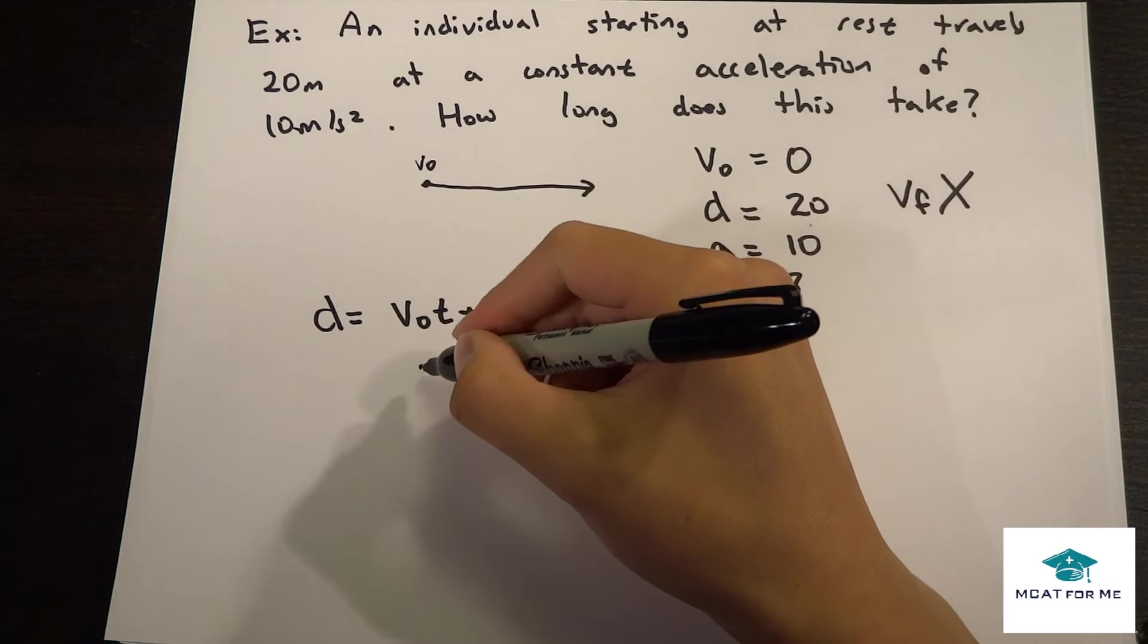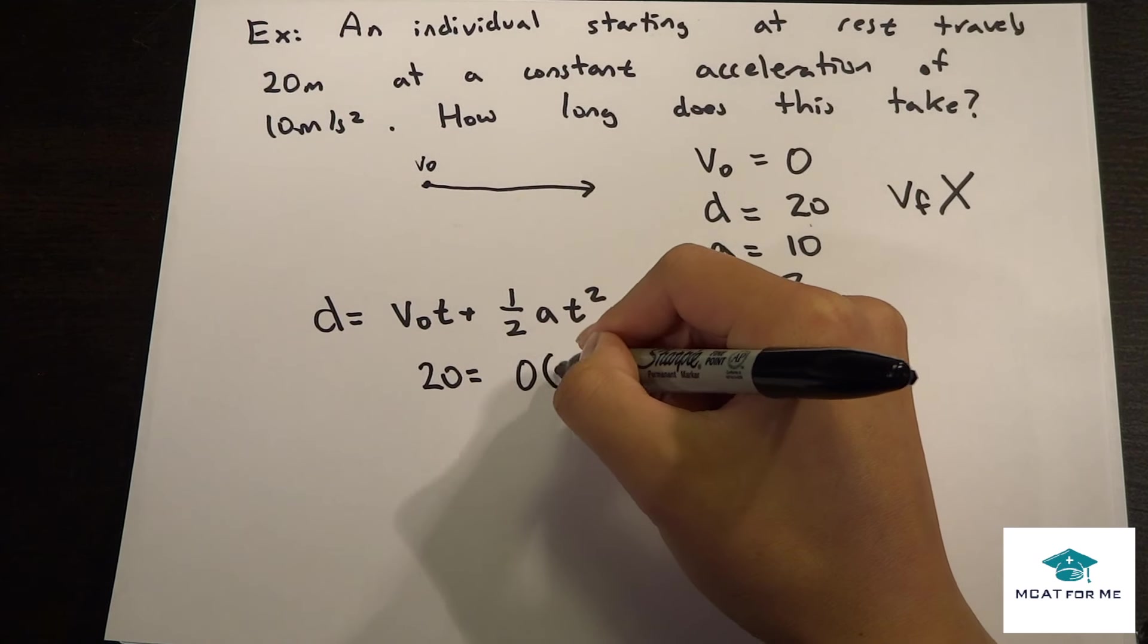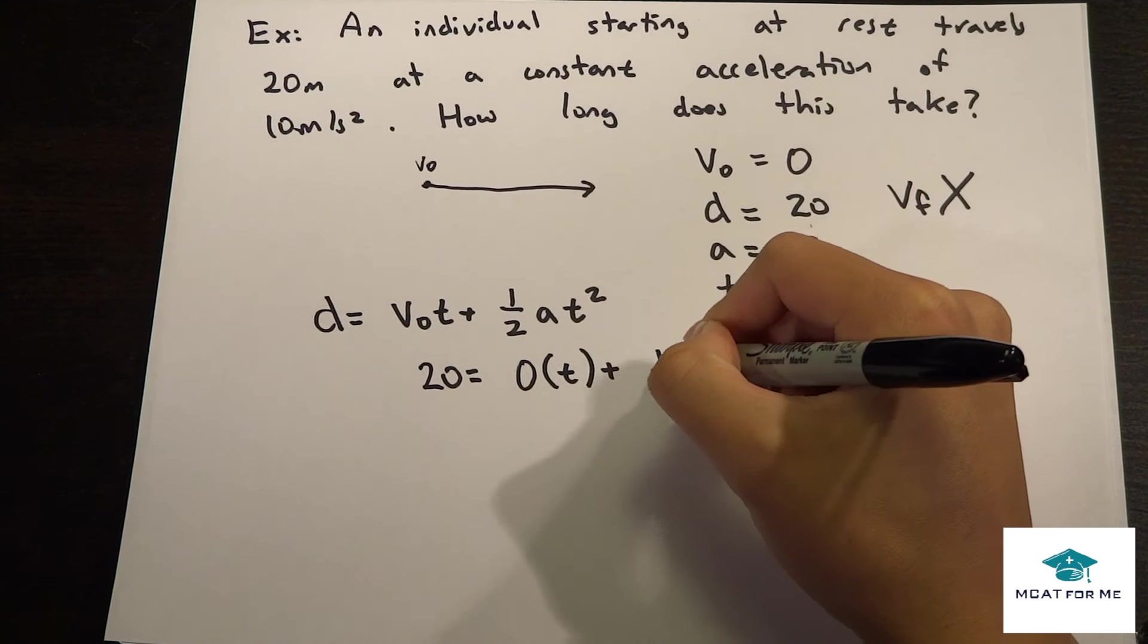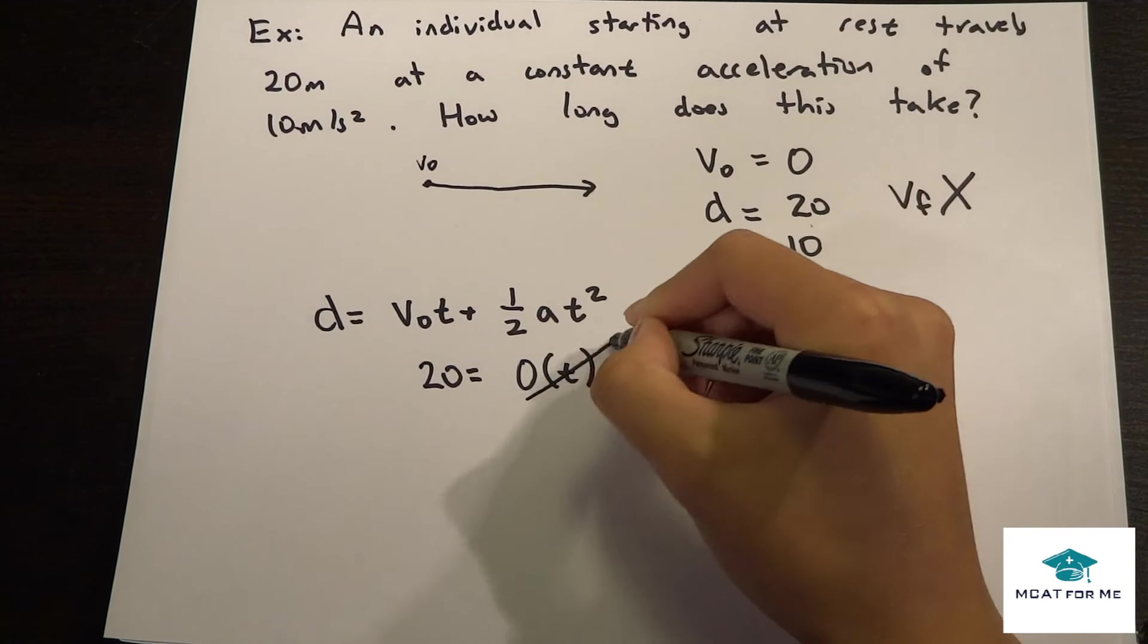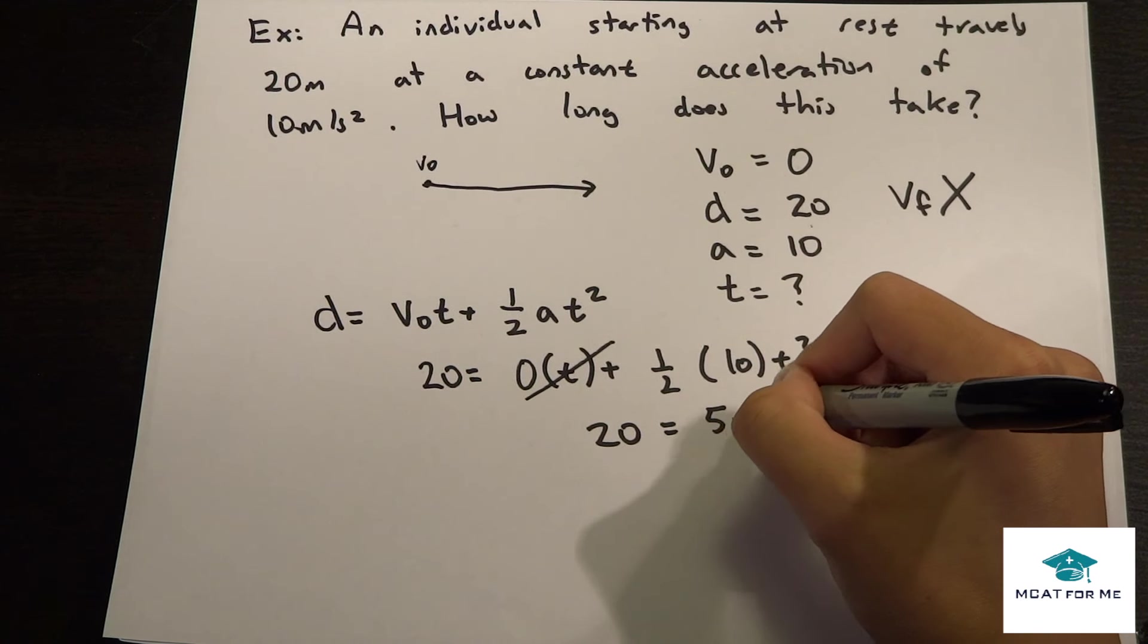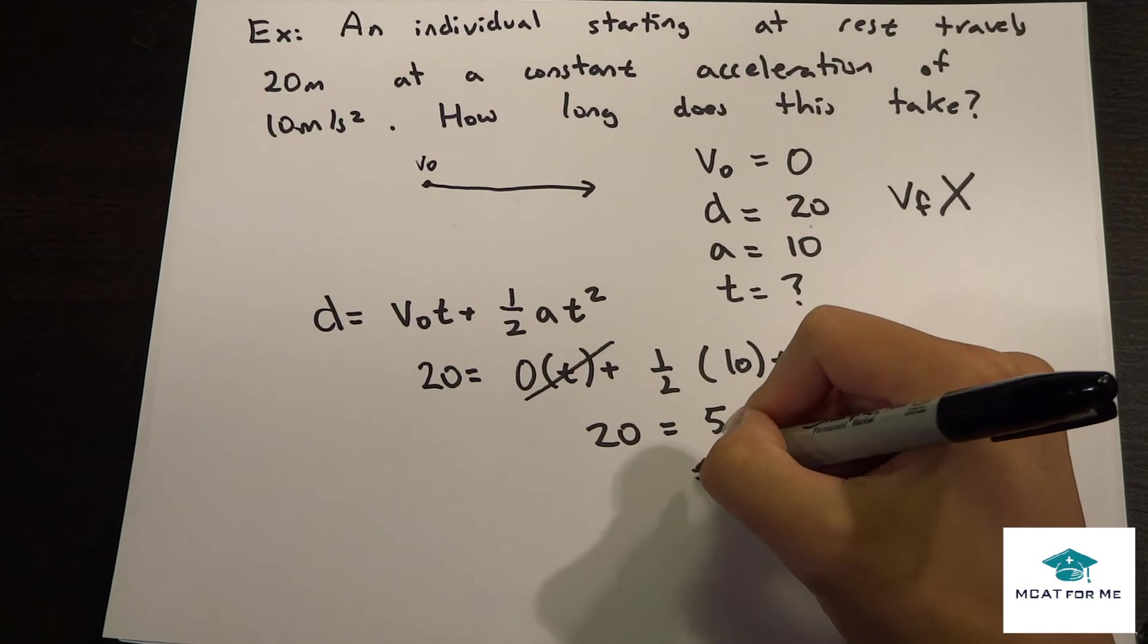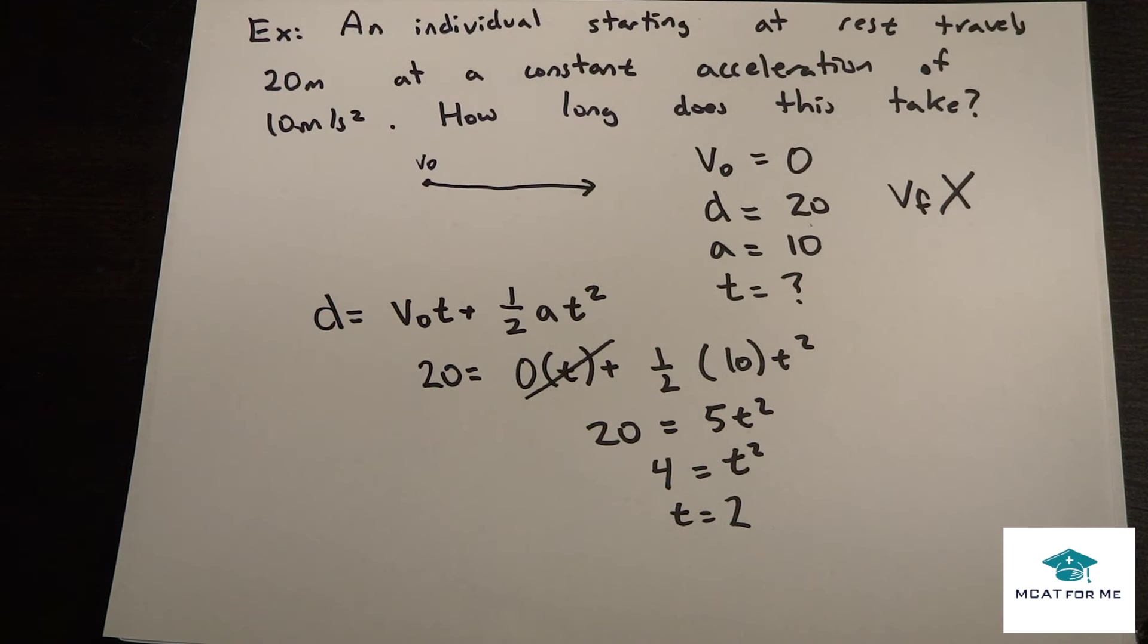Okay, so let's see, so 20 equals V0 times t, so 0 times t plus 1 half times at squared. So this is 0. So 20 equals 5t squared, t squared equals 4, and t equals 2. So our answer will be 2 seconds.